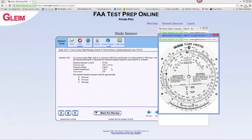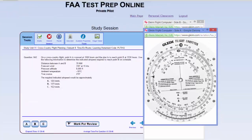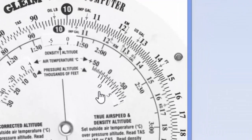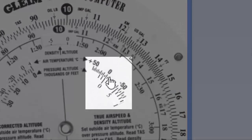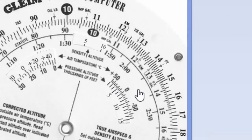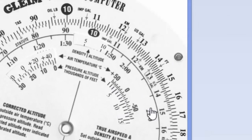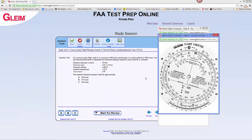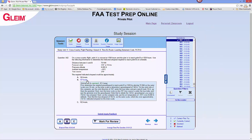We're all the way up to 8,000 feet at minus 10 degrees Celsius. So we need to set minus 10 degrees across from 8,000 feet on the E6B, like so. Now we read our true airspeed outside of our indicated airspeed, and I'm coming up with 140 knots. That's not very close to our answers, but it's closest to 137 knots.